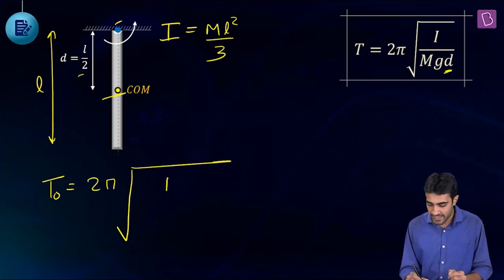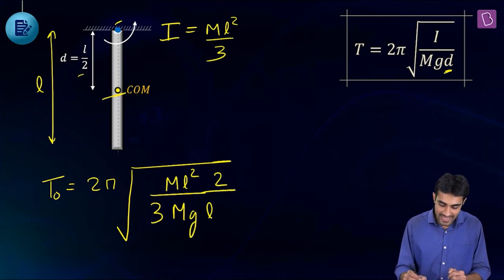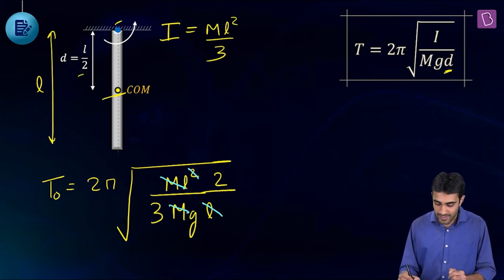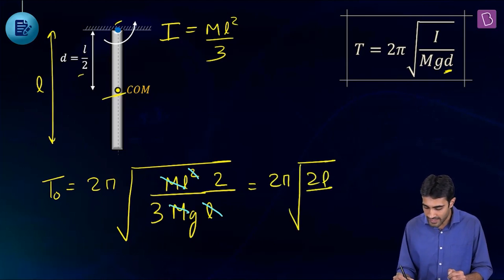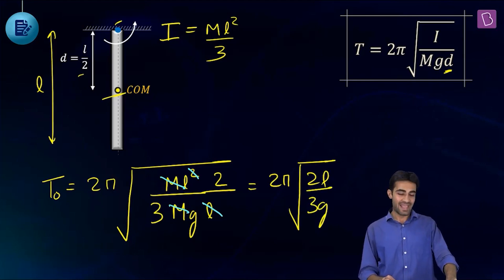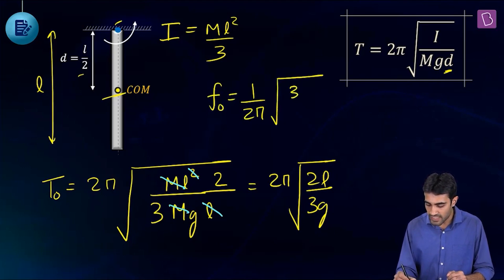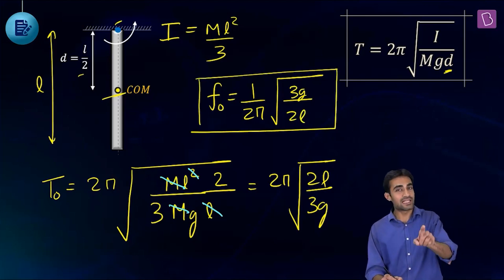The initial time period t0 = 2π√(mL²/3 ÷ mg·(L/2)). One L cancels and m cancels, giving t0 = 2π√(2L/3g). Therefore f0 = (1/2π)√(3g/2L).